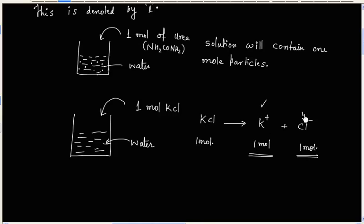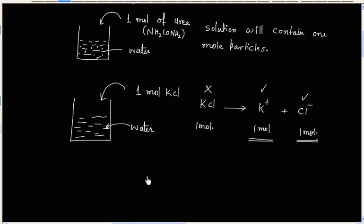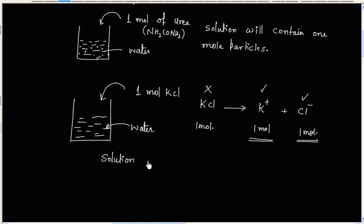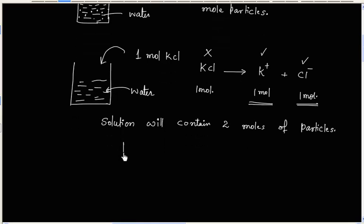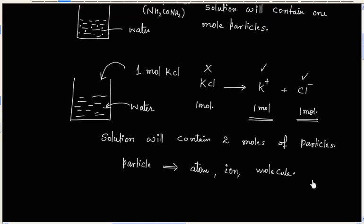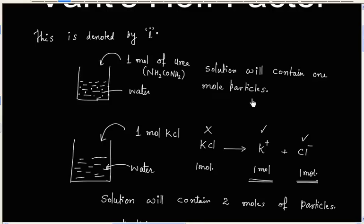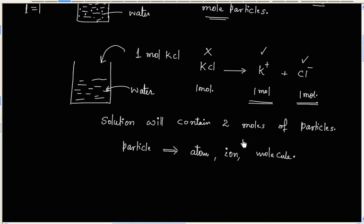So the solution will contain two moles of particles — one mole of K⁺ and one mole of Cl⁻ — with no KCl remaining. A particle can be an atom, an ion, or a molecule. In the first case we have one mole of particles, so the Van't Hoff factor is 1. In the second case we have two moles of particles, so the Van't Hoff factor is 2.